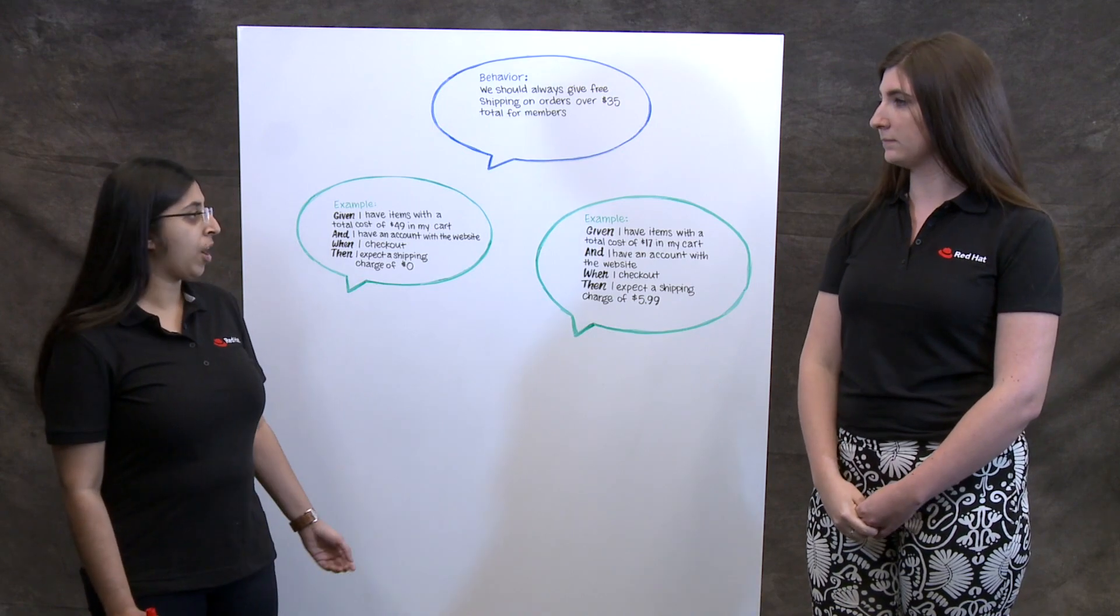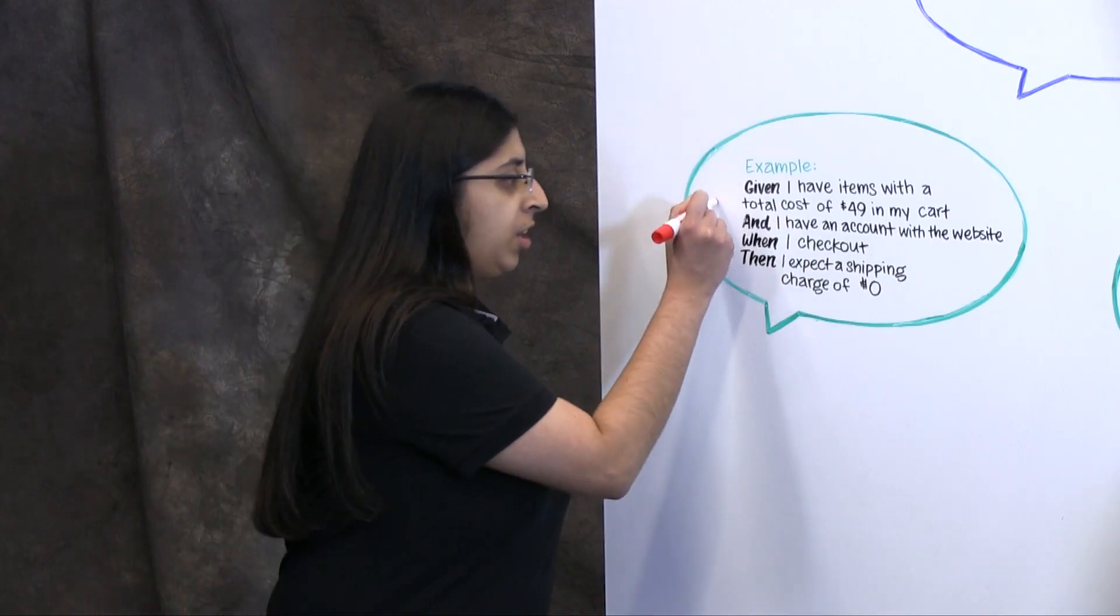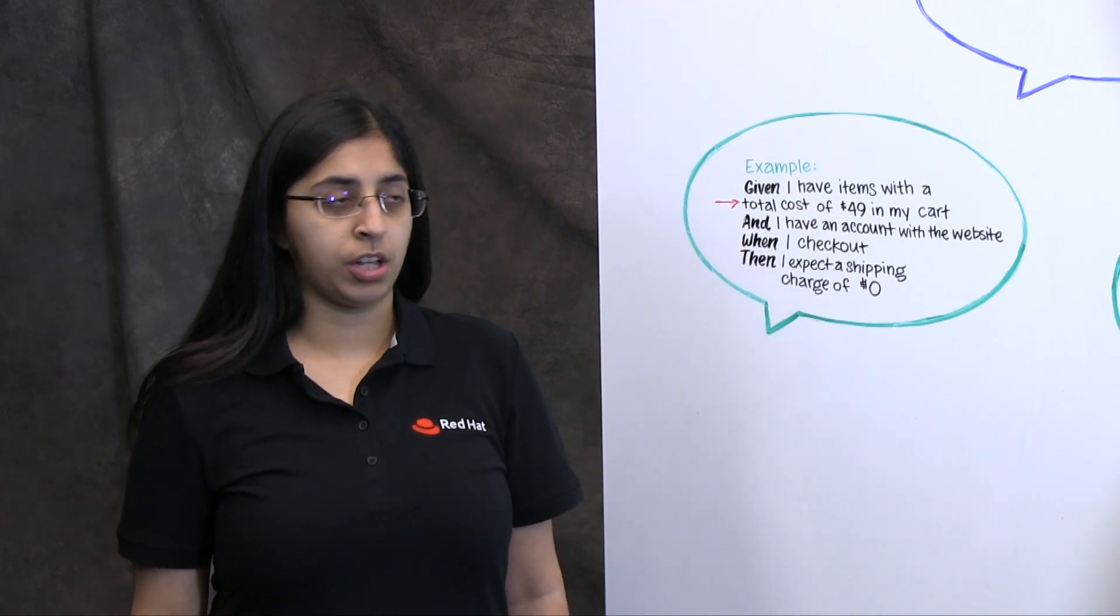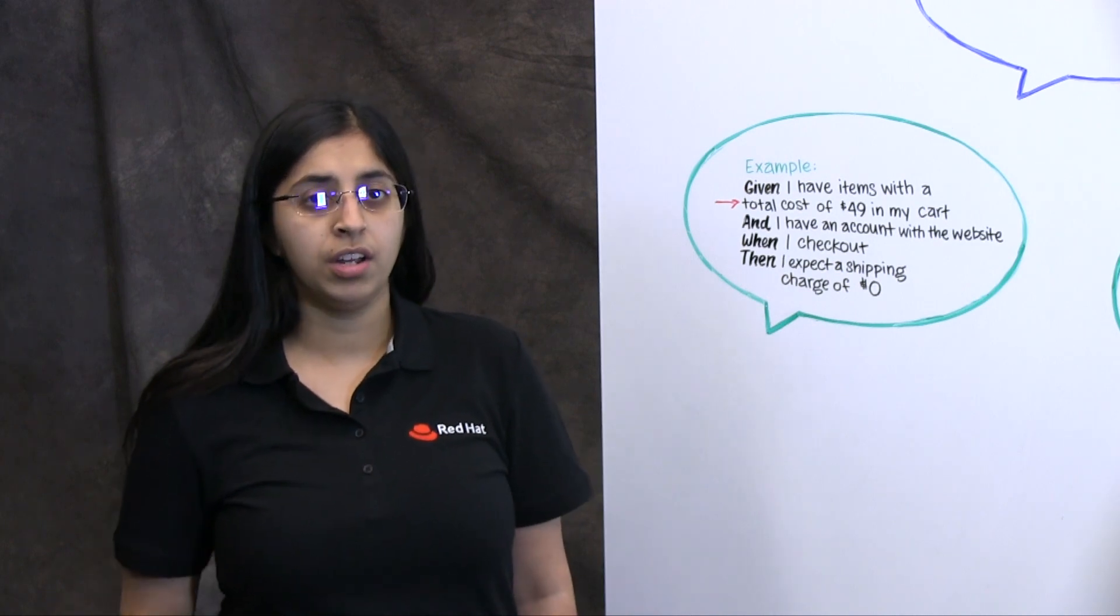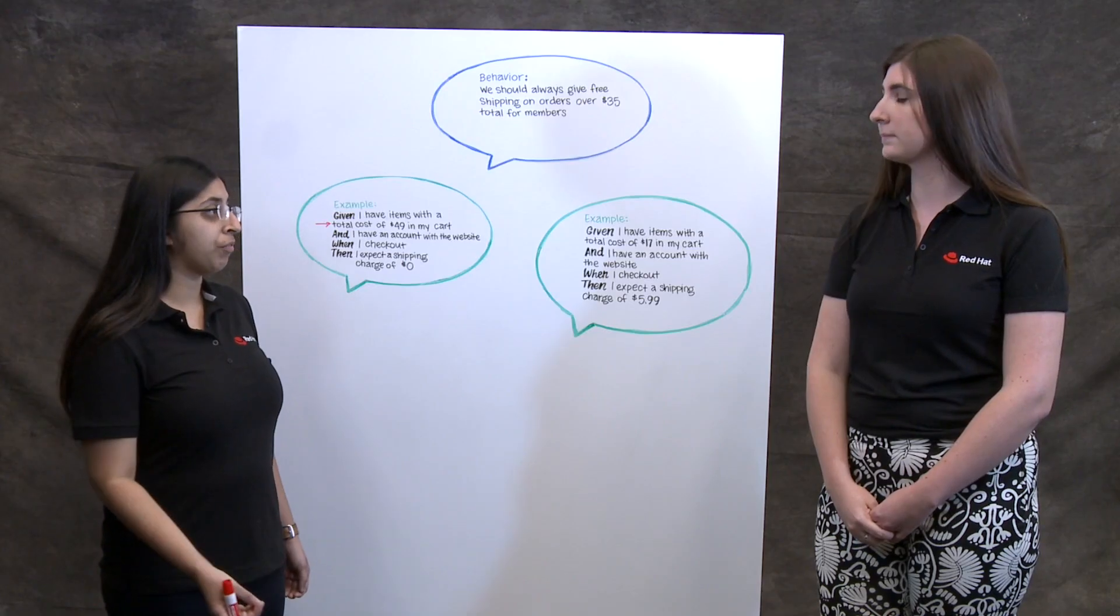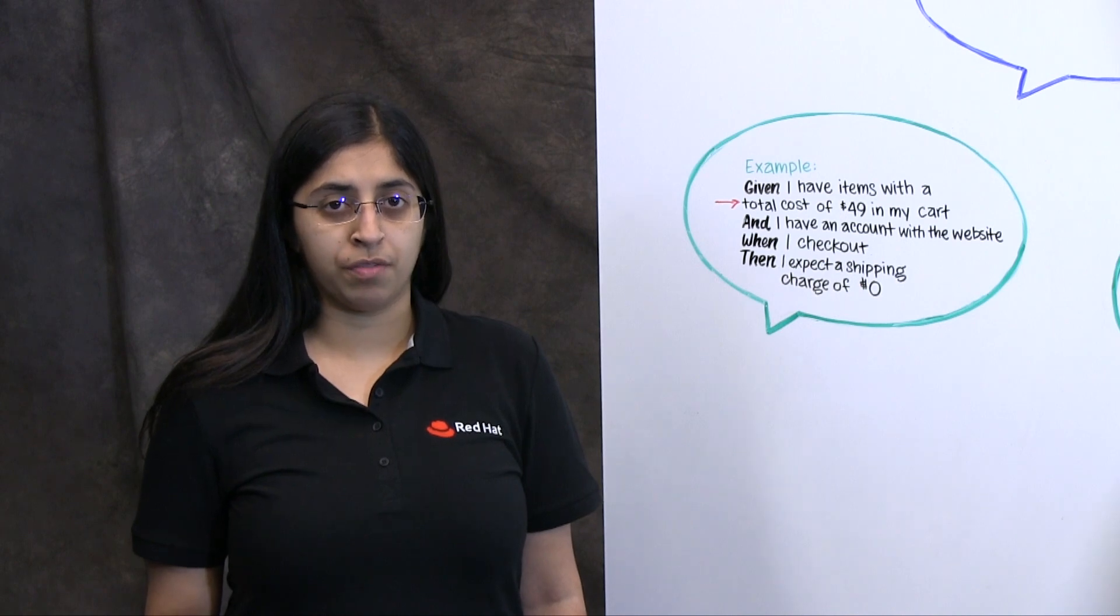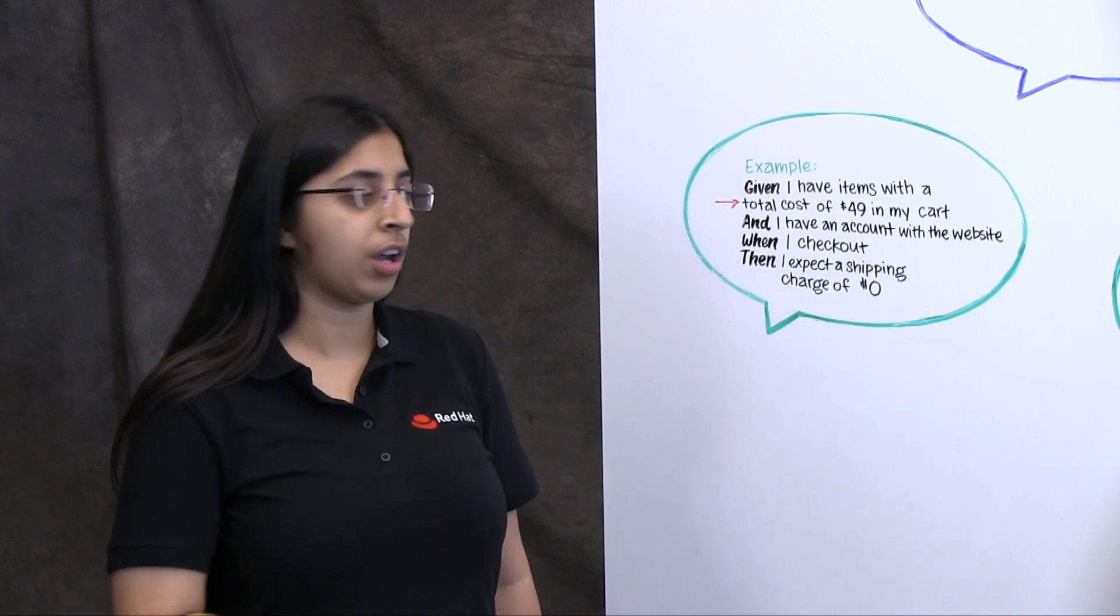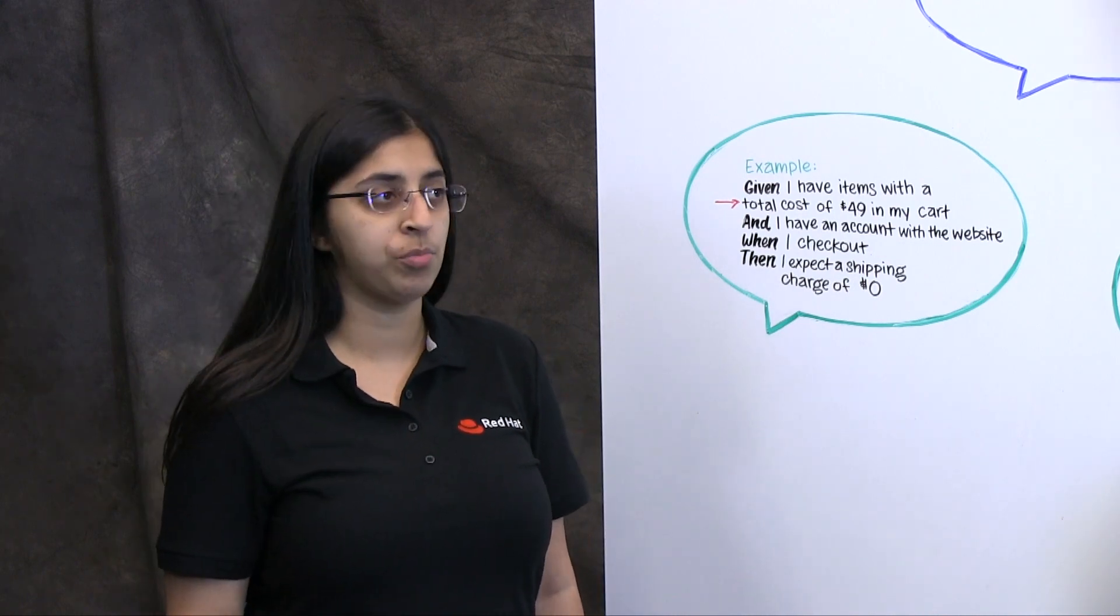One of the best tools to help you with this is to create a shared language for your team to understand. In this example, the word total can mean many different things. For example, does the total include tax? Does the total include all items in my cart or just one? This is an example of how having a team understanding can directly influence your actual behavior. The team, meaning your business, your developers, your QA, and anyone else on your scrum team should come to a common understanding of what that word means. We might even choose to call this the pre-tax total if that's what it really describes.